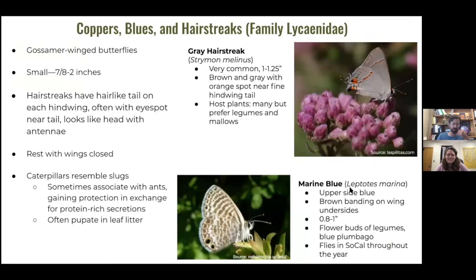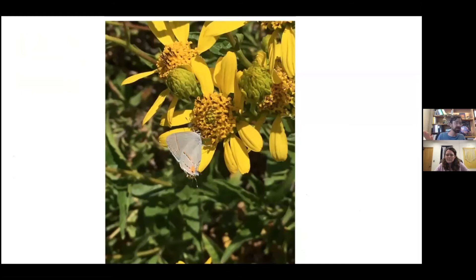Coppers, blues, and hairstreaks — family Lycaenidae — are typically very small butterflies, less than two inches and often less than an inch. The gray hairstreak is one of the most common butterflies in North America, and I've been seeing a lot of them in the garden. The marine blue is another fairly common one in Southern California, flying throughout the year — blue on top with banding on the underside. Here's a gray hairstreak on our native crownbeard (Verbesina) in the garden.